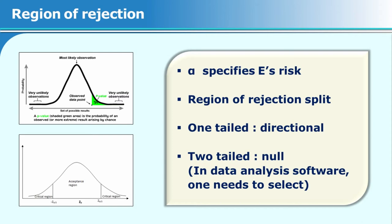If you use a two-tailed hypothesis, you divide the region of rejection: instead of all 0.05 on one side, you take 0.025 on one side and 0.025 on the other side, giving you a two-tailed test. You can then proceed with a null hypothesis, stating that you think there is no difference between the two means — you do not know based on your literature review which mean is likely to be higher.